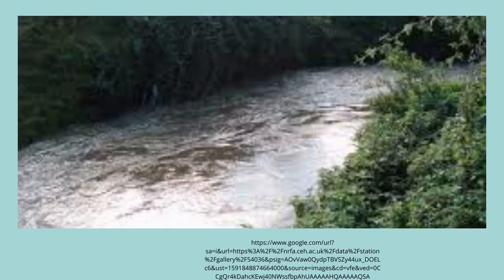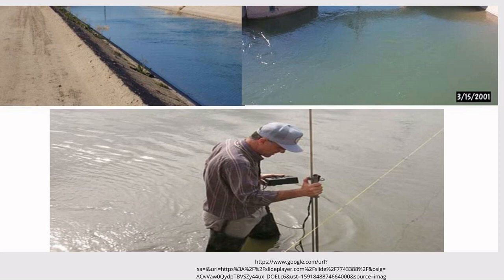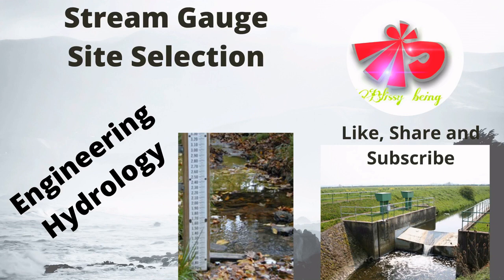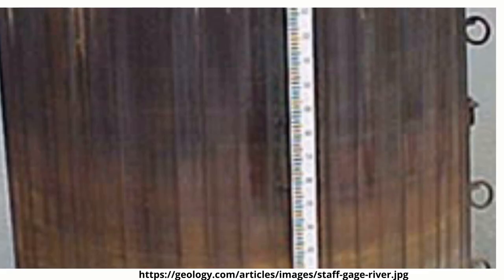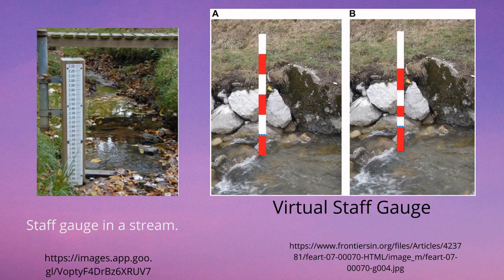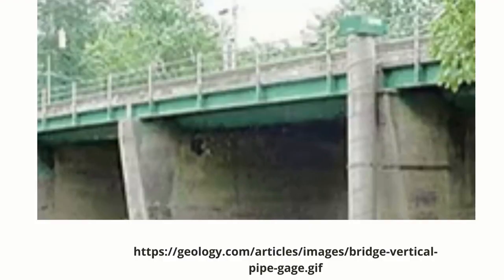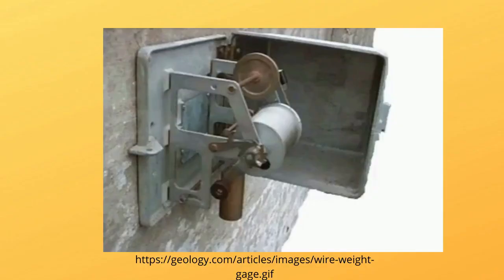The factors that should be considered for site selection of stream gauge stations are: first, the site should be accessible throughout the year for installation, operation, and maintenance. Second, the site should be a more or less straight and stable reach, with a length about 10 to 20 times the width of the channel.